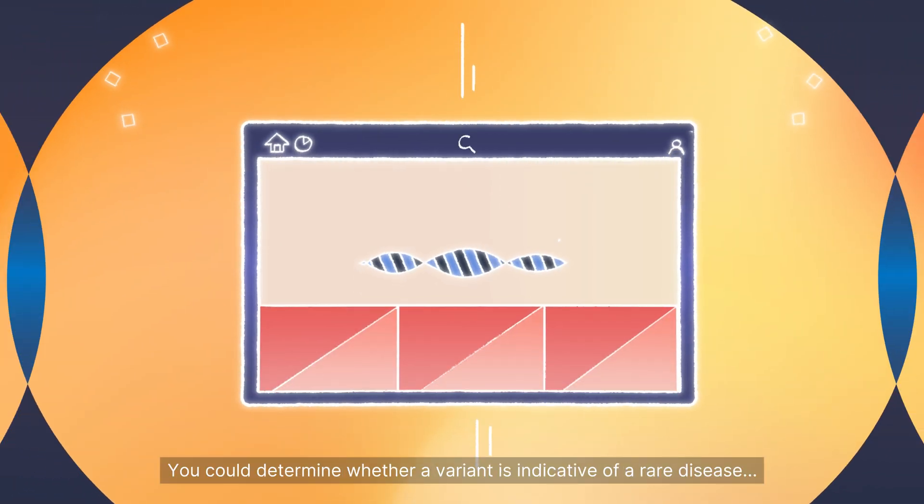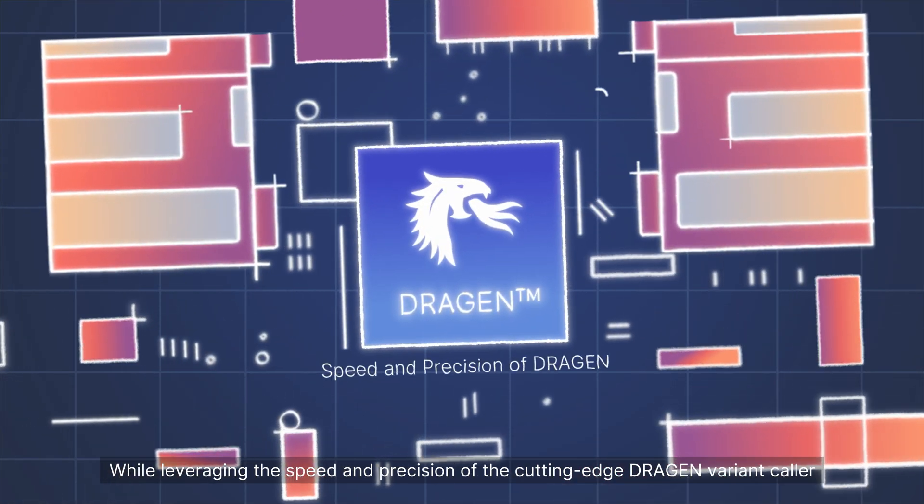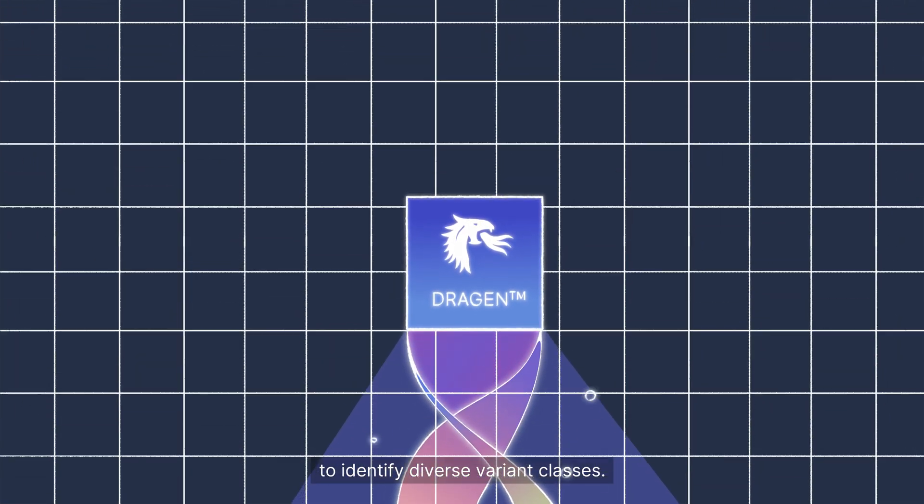You can determine whether a variant is indicative of a rare disease, while leveraging the speed and precision of the cutting-edge Dragon variant caller to identify diverse variant classes.